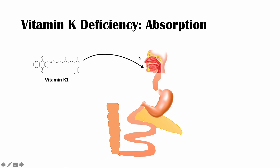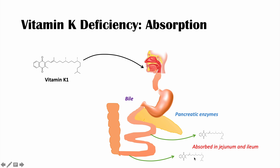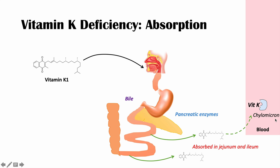So how is vitamin K absorbed? Once we ingest vitamin K1, it enters the gastrointestinal tract. Because it's a fat-soluble vitamin, we need bile to emulsify fats, and we also need pancreatic enzymes to help digest certain fats. The processed vitamin K1 then reaches the jejunum and ileum, where fat-soluble vitamins are absorbed. Once absorbed, it enters the bloodstream and binds to chylomicron, which transports vitamin K1 throughout the body.